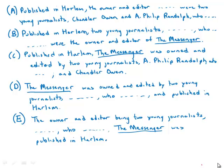This is one of the hard ones where the whole sentence is underlined. We'll focus first on the modifiers. The modifier 'published in Harlem' — 'the owner' — so that's a misplaced modifier, because obviously the owner and editor were not published in Harlem. In B, 'published in Harlem' modifies 'two young journalists' — again another dangling modifier.